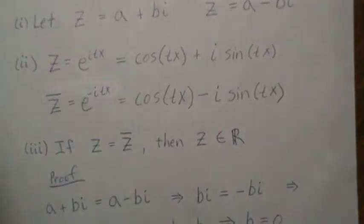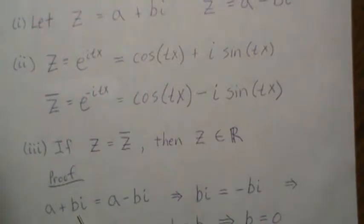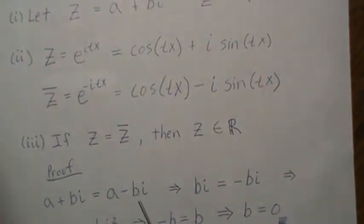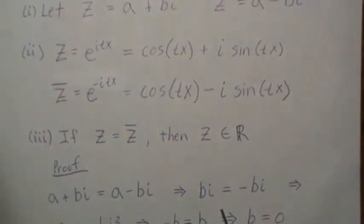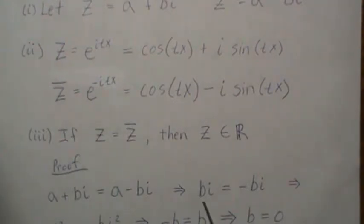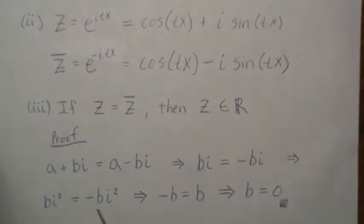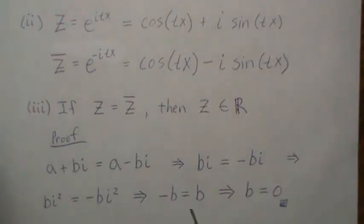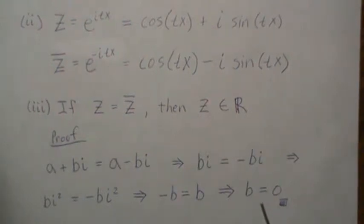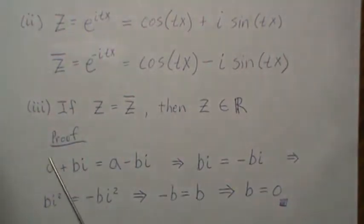The proof is very simple. If z = z̄, meaning a + bi = a - bi, and we subtract a from both sides, we get bi = -bi. Then we multiply both sides by i and get i²b = -i²b. Well, i² is -1, so that implies -b = b, which means either 1 = -1, which is silly, so the only solution is that b = 0. And if b is zero, then the number is a real number.